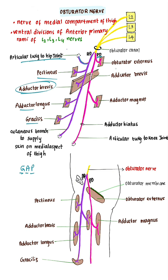The posterior division supplies obturator externus, adductor brevis, and adductor magnus. The anterior division supplies adductor longus and adductor brevis, while adductor magnus is supplied by the posterior division. Adductor brevis is supplied by both anterior and posterior divisions. Remember obturator externus is supplied by the posterior division. The posterior division also gives a genicular branch — an articular twig — to the knee joint.